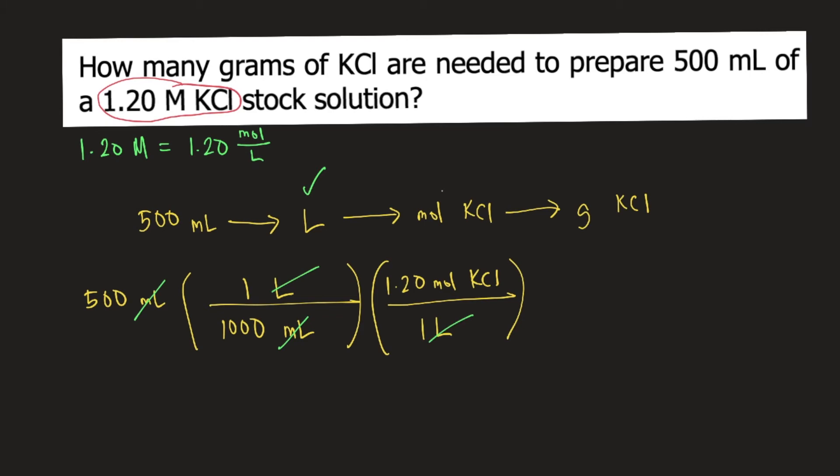Now you have moles of KCl. And lastly, to convert moles of KCl to grams of KCl, you need the molar mass of KCl. And the molar mass of KCl is equal to 74.55 grams per mole. So you put 1 mole at the bottom.